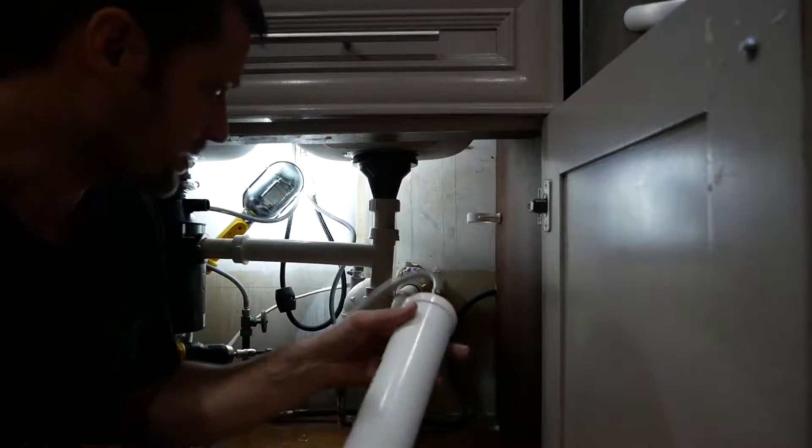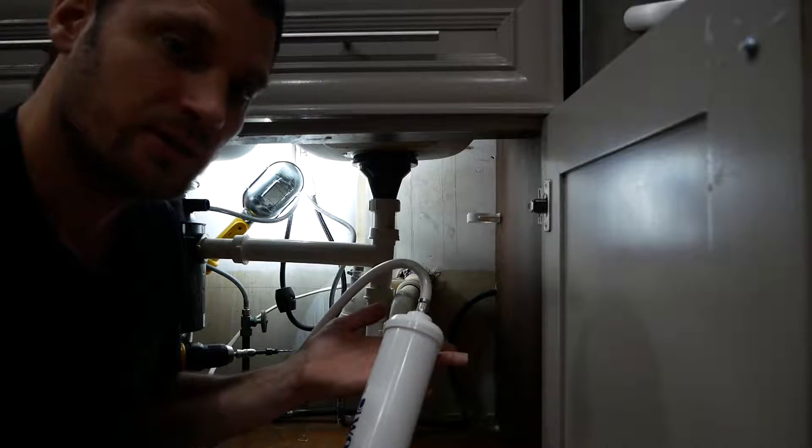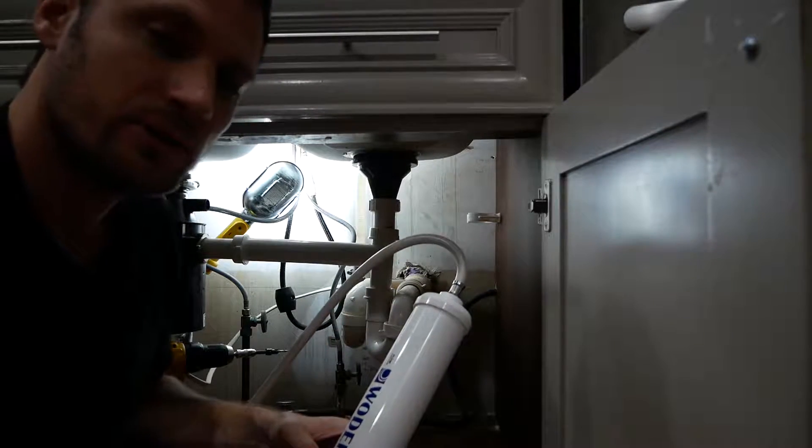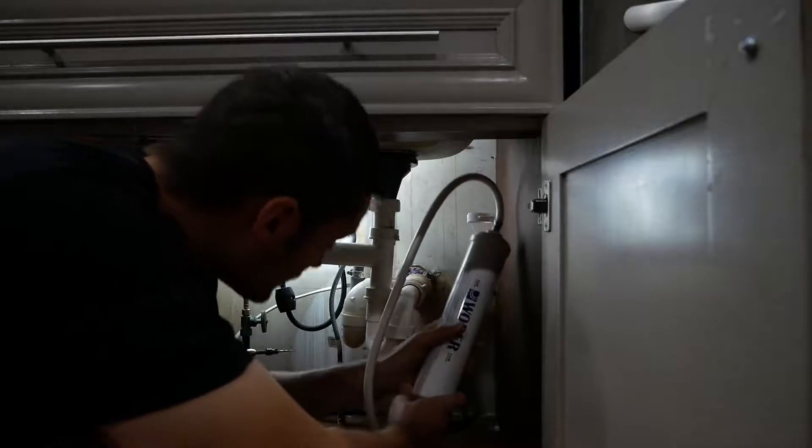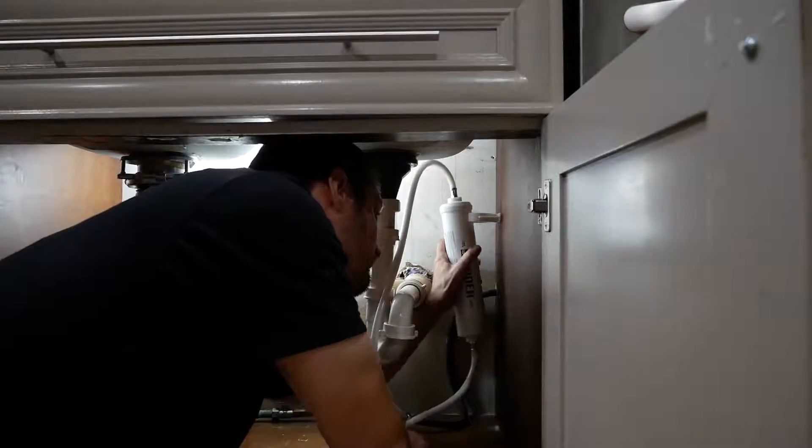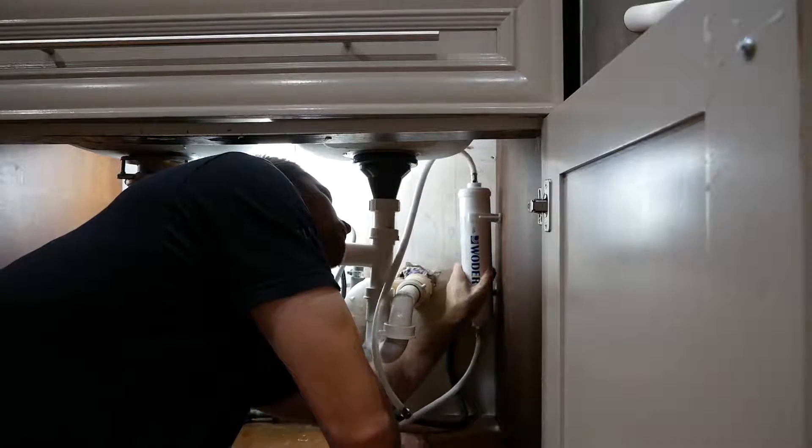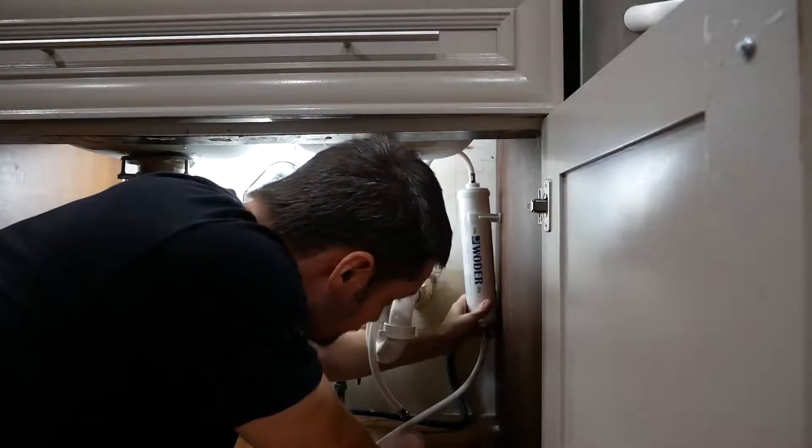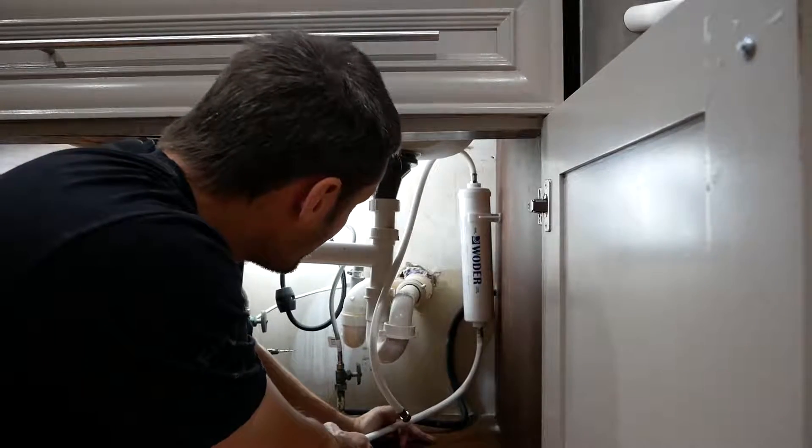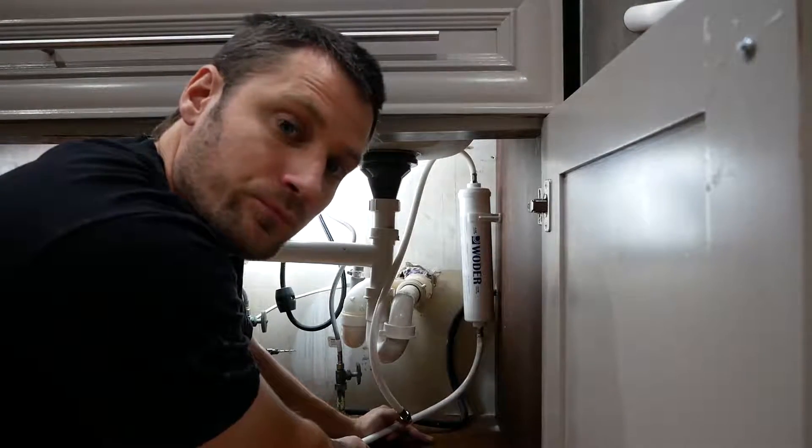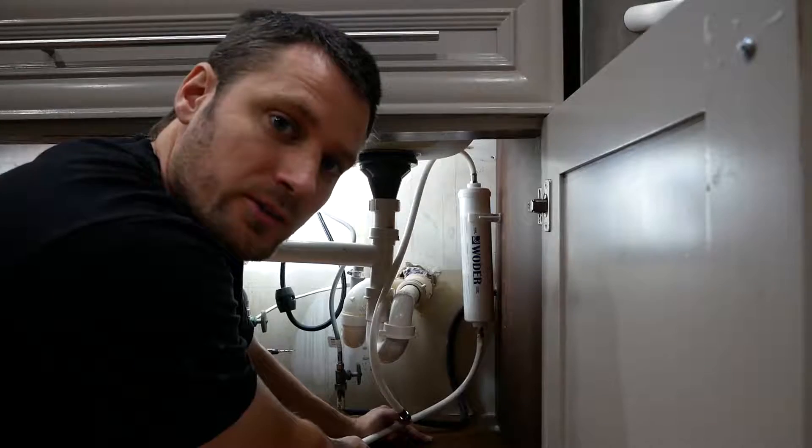I don't think the orientation on the bracket really makes any difference but I'm going to allow gravity to flow downward. So I'm going to stick it in this way. Okay that's exactly where I want that and we will now get the water line disconnected.